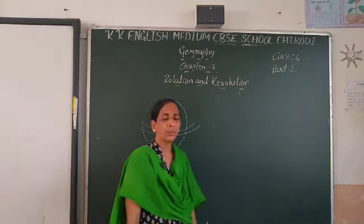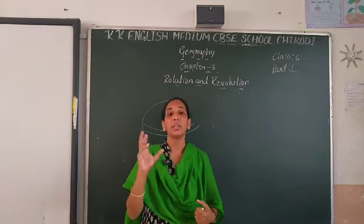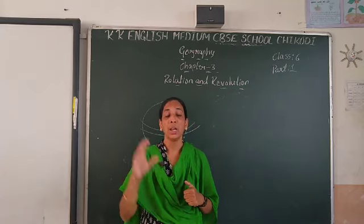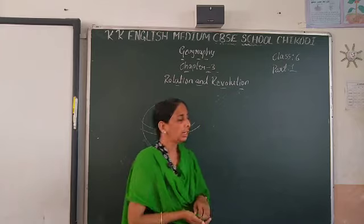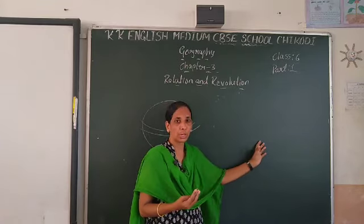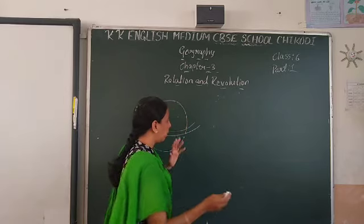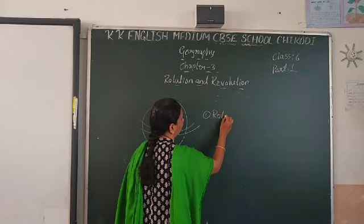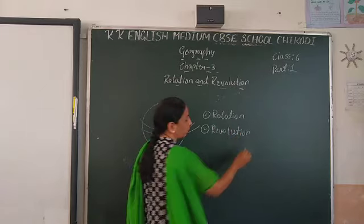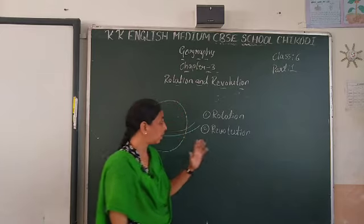In the previous class we learnt about planets moving in our solar system. Now in this chapter we learn about earth's motion. The earth is moving in two types — one is rotation, and another one is revolution.